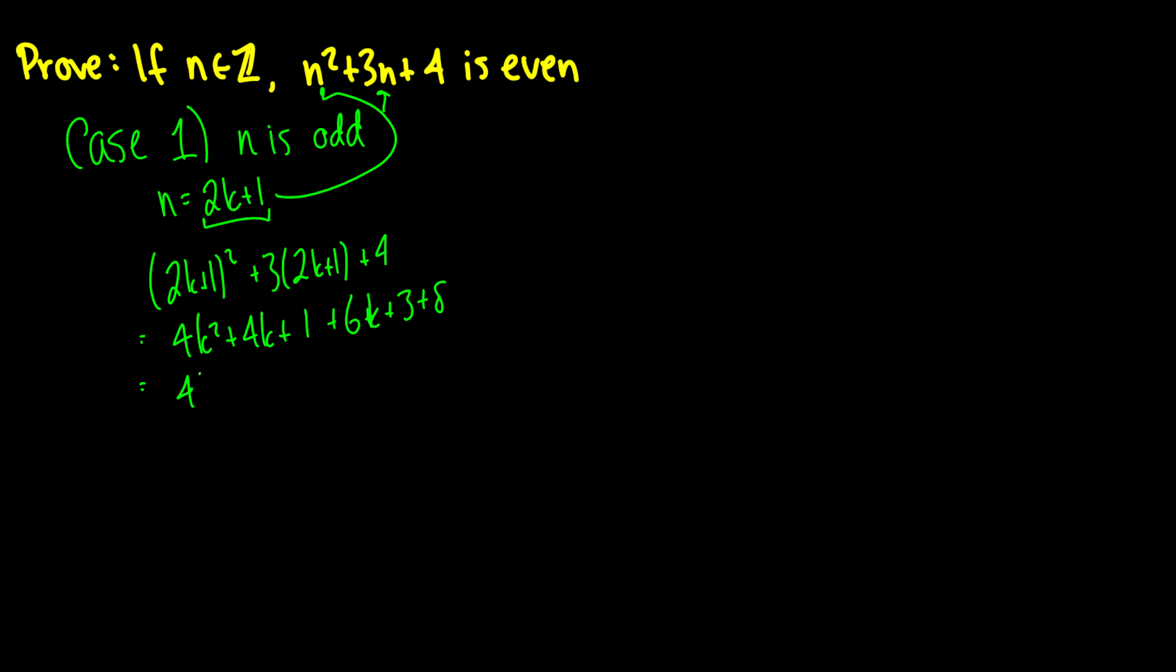When we collect all of our terms here, we get 4k squared plus 10k plus 12, and all of these terms are divisible by 2, therefore n squared plus 3n plus 4 is even. So that's good.